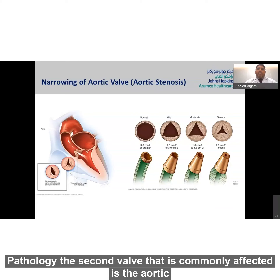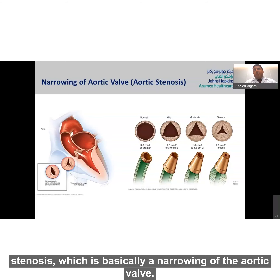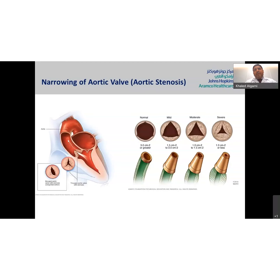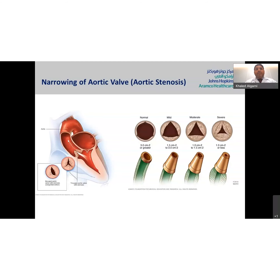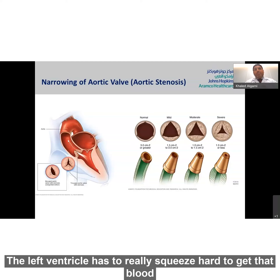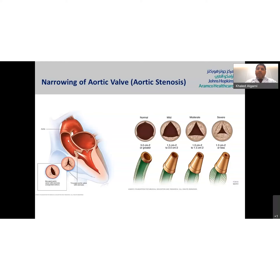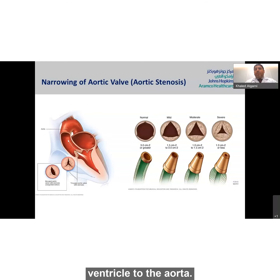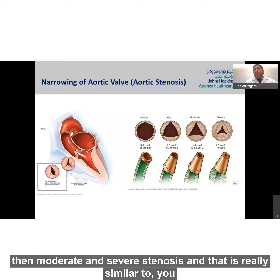The second valve commonly affected is the aortic valve. The most common pathology is aortic stenosis — basically a narrowing of the aortic valve — where calcium deposits accumulate on the leaflets of the aortic valve, resulting in significant narrowing. Therefore, the left ventricle has to squeeze very hard to eject blood through the narrowed valve. The normal valve has a wide opening allowing smooth flow, and as the valve starts to narrow, you develop mild, then moderate, then severe stenosis.